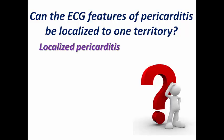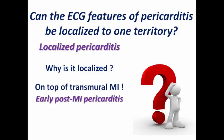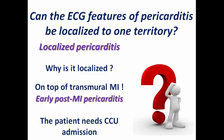Can ECG features of pericarditis be localized to one territory — so-called localized or patchy pericarditis? If you see ST elevation and PR depression only in the inferior leads or only in the chest leads, you should ask yourself why it is localized. Could it be on top of a transmural MI? This may represent early post-MI pericarditis. Do not jump to a diagnosis of localized pericarditis and discharge the patient.